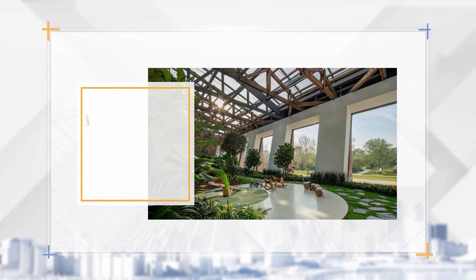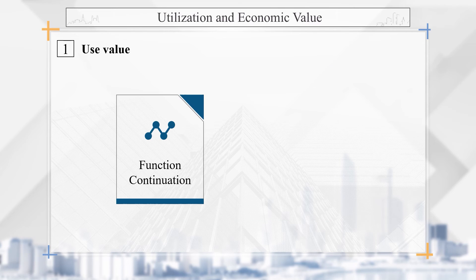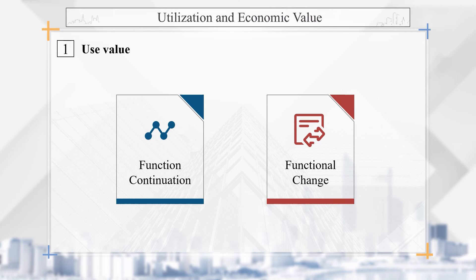The third aspect of the value of historical buildings is utilization and economic value. Different from cultural relics architecture, most historical buildings still have use value in addition to their ornamental value. The utilization value of historic buildings is mainly reflected in the function of continuity and function of change, which is a healthy view of historic building protection and regeneration.